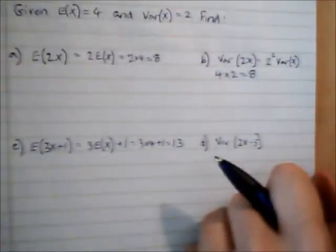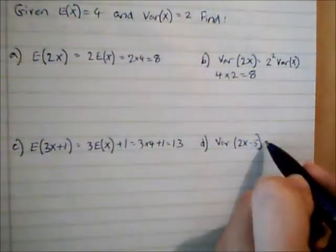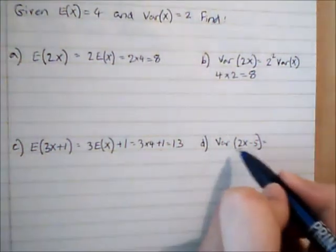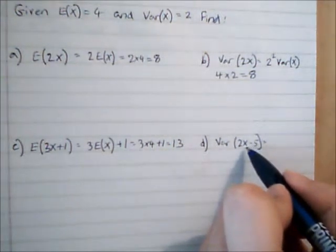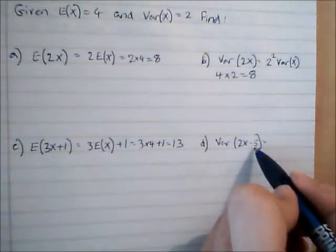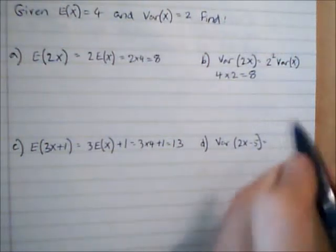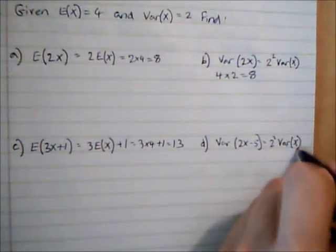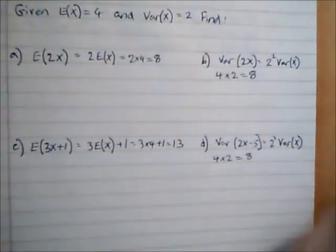For Var(2X-5), we can ignore the minus 5 here, it's actually irrelevant. The reason is because when we're looking at variance, we're looking at the spread of data. If we simply add or subtract values from each of our values of X, it's not going to affect the way those are distributed about the mean. So actually here we just have 2² Var(X) again, which is 4 multiplied by 2, giving us a variance of 8 again.